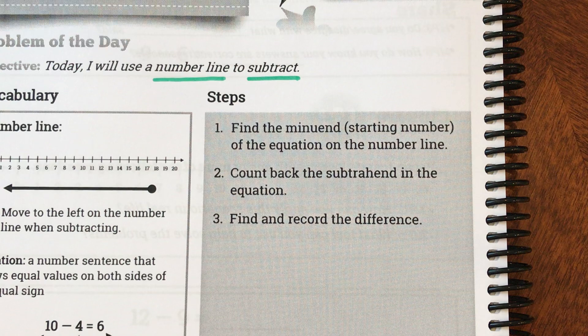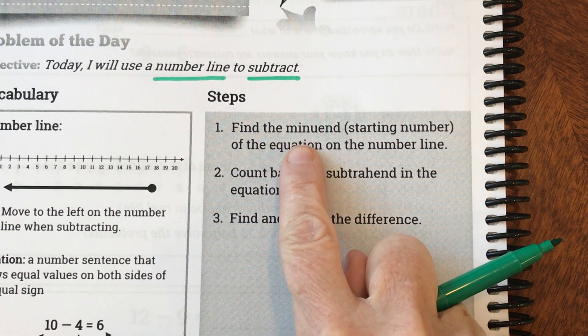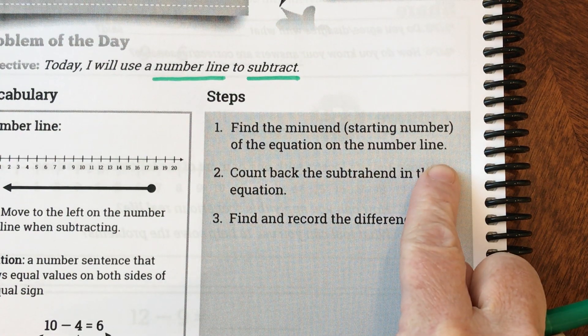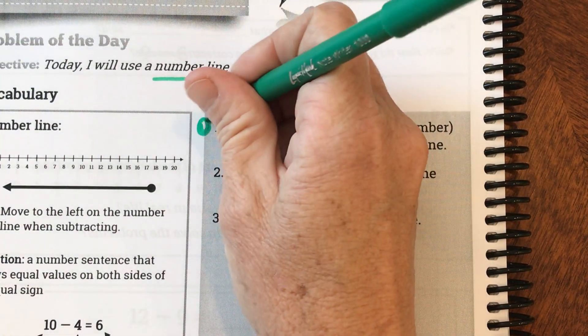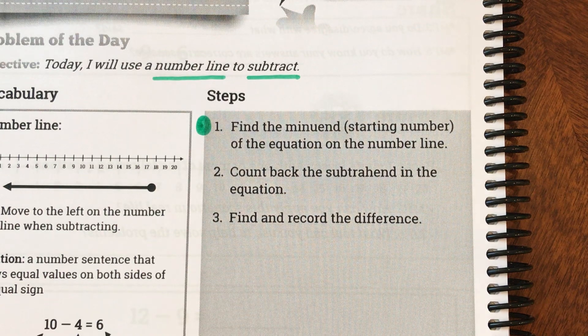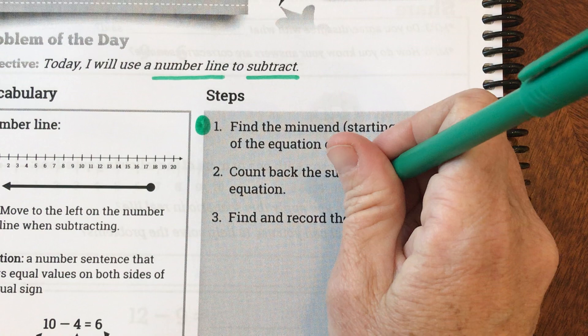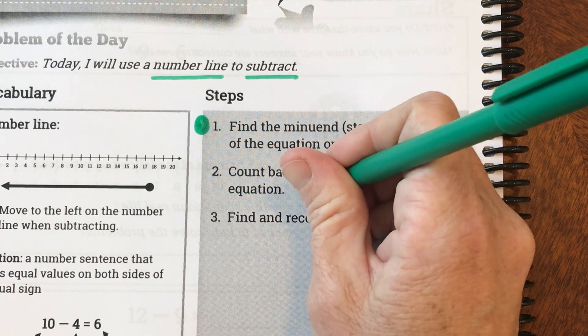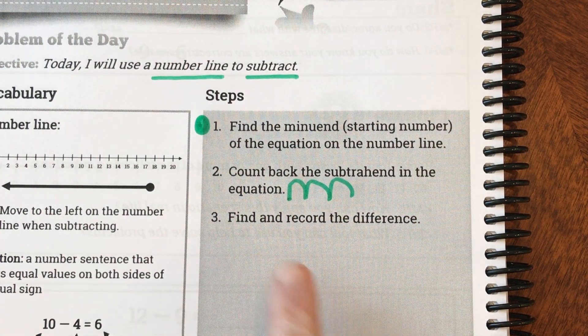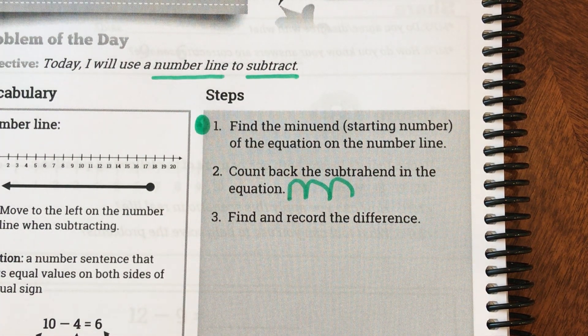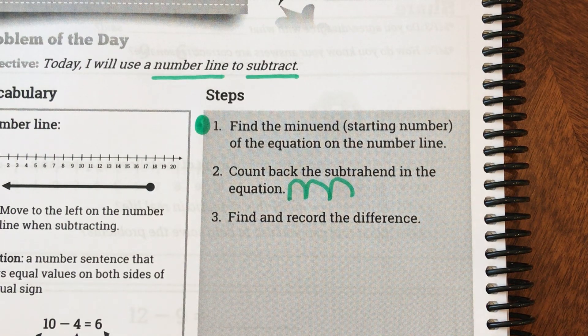So let's look at our steps. It says we're going to find the minuend or our starting number of the equation on the number line. So when we find it, we're going to make a dot on it and then we're going to count back the subtrahend. So we're going to go backwards using these and then we're going to find and record the difference. I'm going to show you boys and girls what this looks like before we do some together. I'm going to grab my red pen. Remember my red pen means you're just going to sit and watch for a moment.